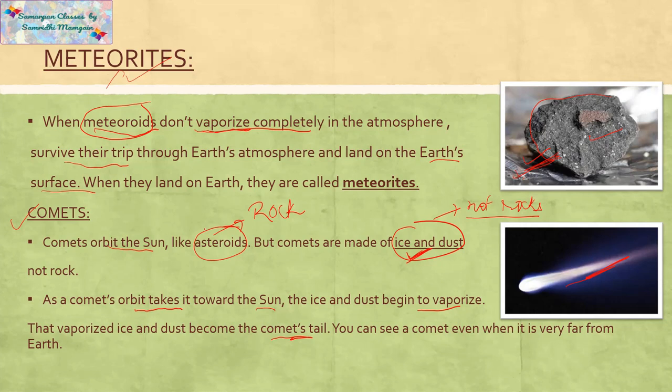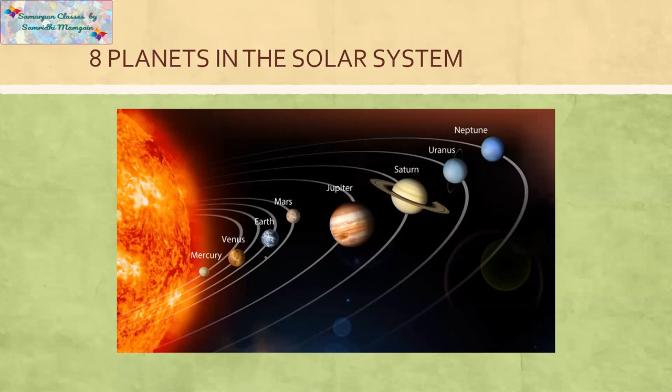So these are the eight planets in the solar system. You must know their names and the order: Mercury, Venus, Earth, Mars, Jupiter, Saturn, Uranus, Neptune.